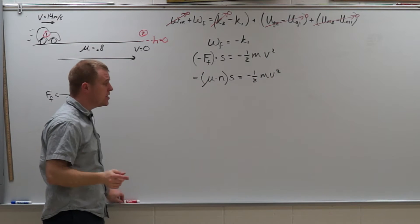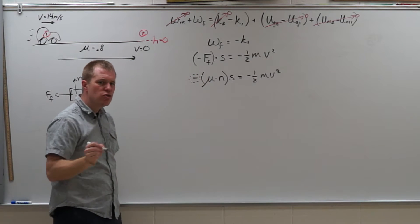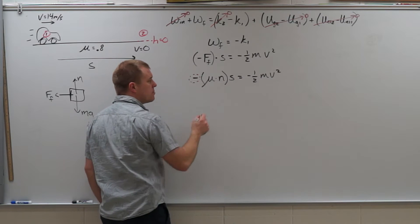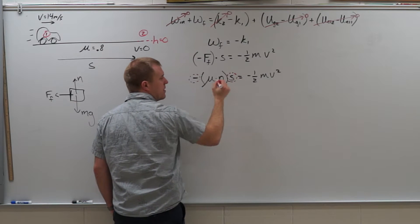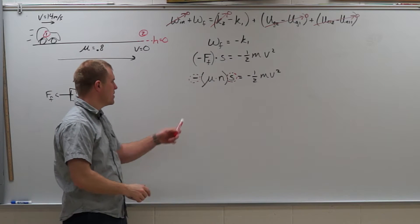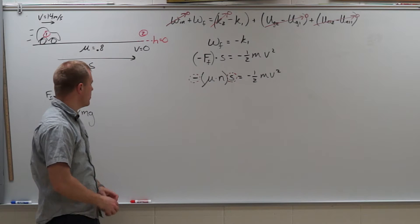Something to check as you're doing these problems with friction: make sure you have that negative sign. Friction usually does negative work if it's slowing something down. And then displacement tends to get dropped off as we make a bunch of substitutions here. So make sure when you get to the end you have that negative and that displacement.